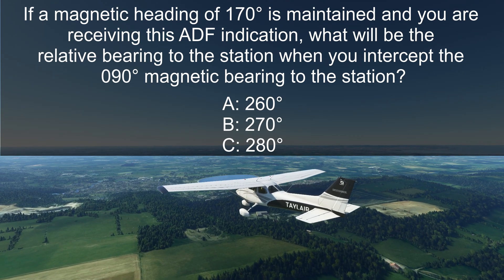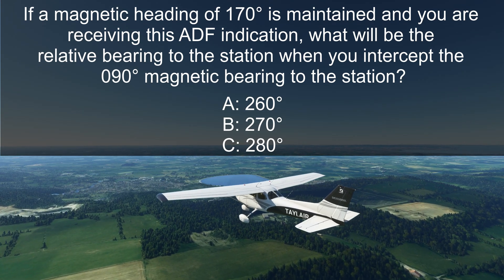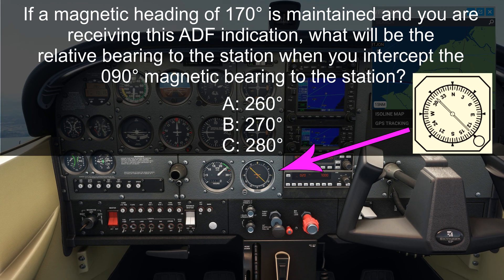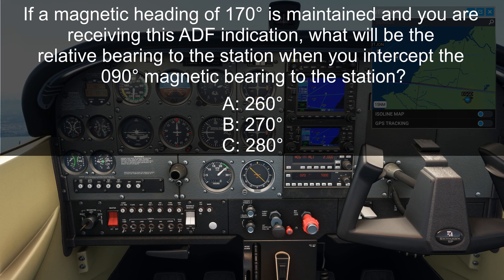If a magnetic heading of 170 degrees is maintained, and you are receiving this ADF indication, what will be the relative bearing to the station when you intercept the 090 magnetic bearing to the station? A: 260 degrees. B: 270 degrees. C: 280 degrees.